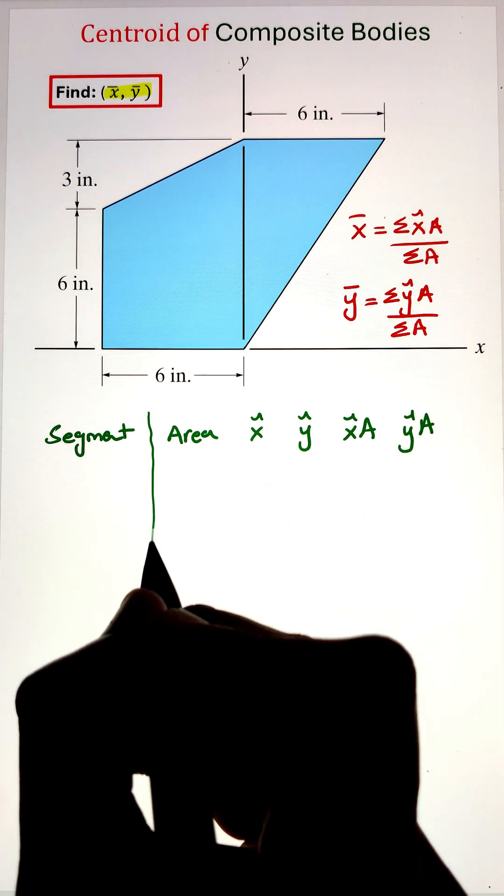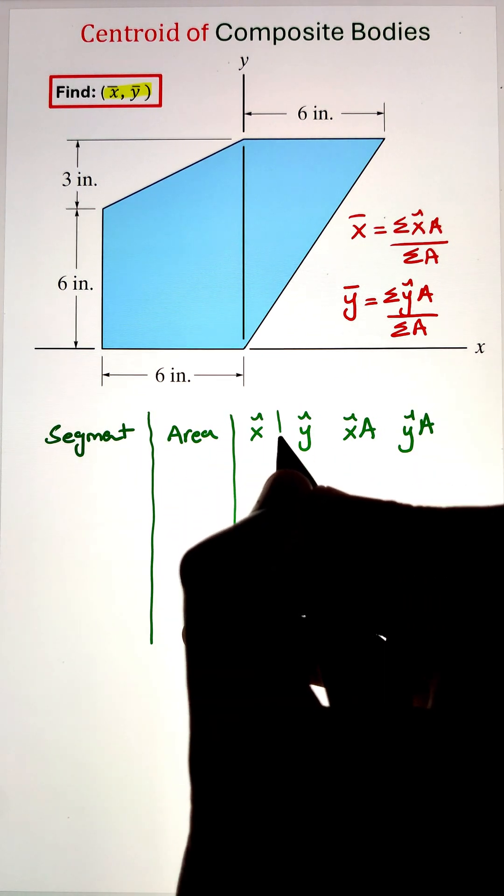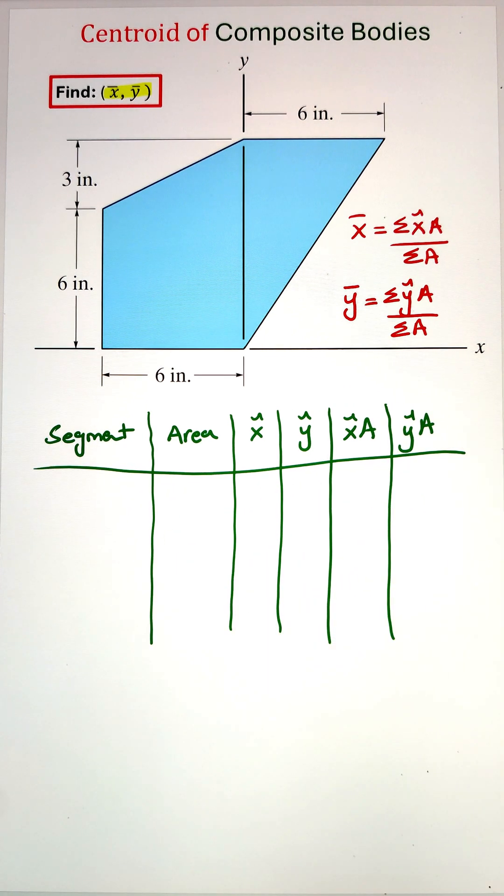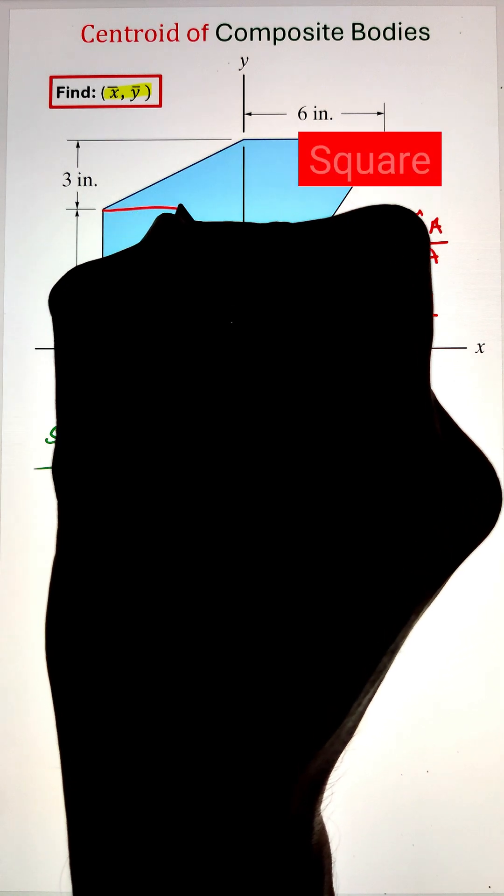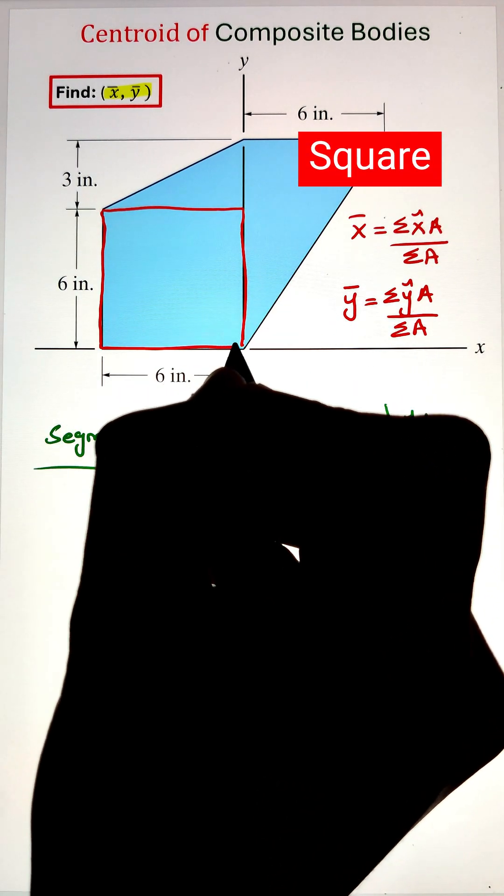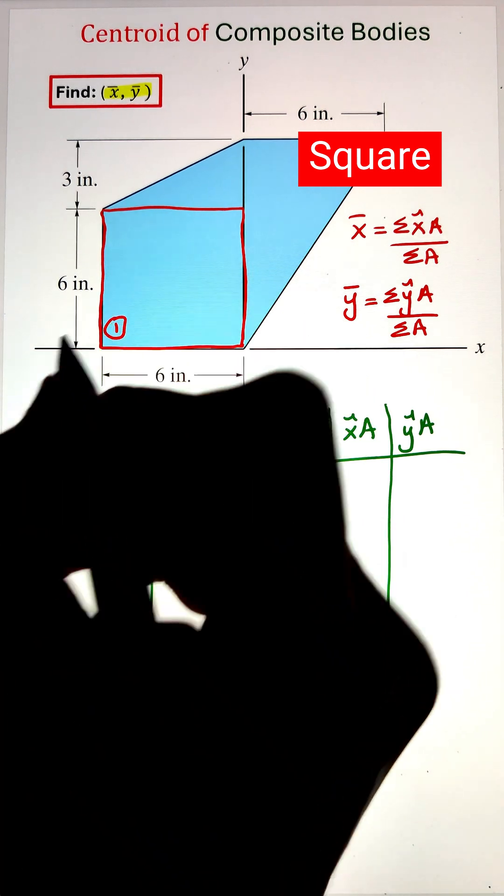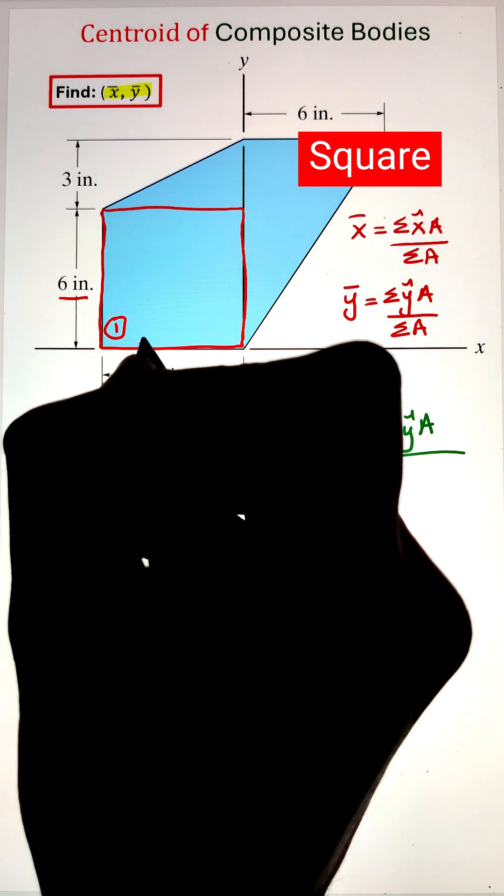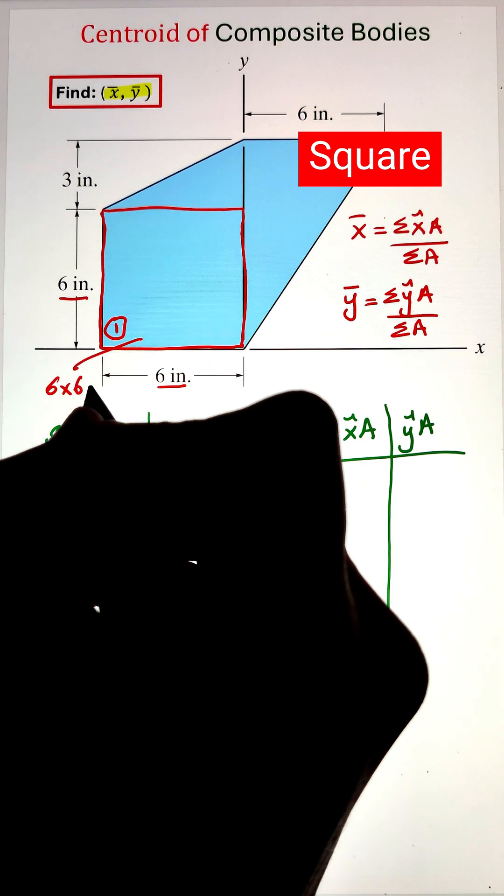Let's get started. We can divide our first segment as a square having dimensions of 6 inches by 6 inches, so the area of that square will be 36 square inches. Since the centroid of the square will be in the middle of it, based on the coordinate system shown here, that will be -3 inches along the x direction and +3 inches along the y direction.